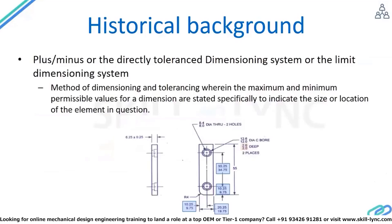Each dimension has a tolerance, which directly gives us a plus/minus or the limit dimensioning system. For example, the nominal size of a given dimension might be 35, but it still has a tolerance of plus 0.25, minus 0.25. This is the idea — every dimension should have a tolerance so that it is achievable and ends up in interchangeability.